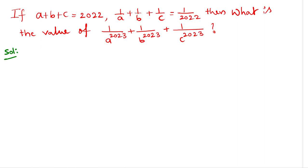You can see on the screen: if A plus B plus C equals 2022, and 1/A plus 1/B plus 1/C equals 1/2022, then what is the value of 1/A^2023 plus 1/B^2023 plus 1/C^2023?